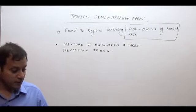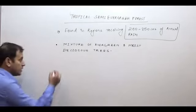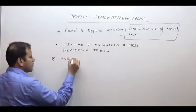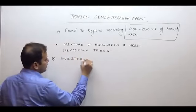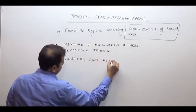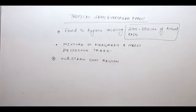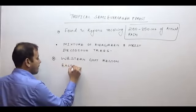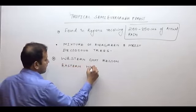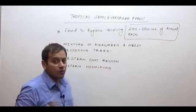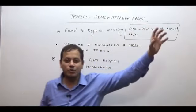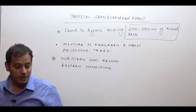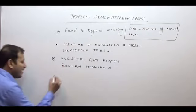Where are semi-evergreen forests found? They are found in the western Ghats region and in the eastern Himalayas — specifically the lower part of the eastern Himalayas. The western Himalayas — Jammu and Kashmir, Uttarakhand, Himachal Pradesh — do not receive heavy rainfall, so semi-evergreen forest is not found there. They are also found in the Andaman and Nicobar Islands.